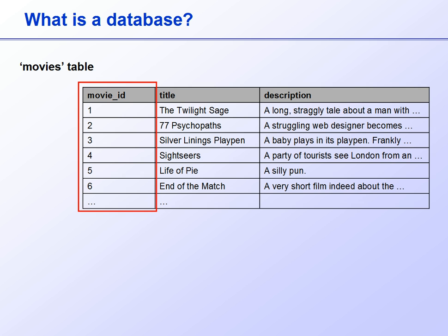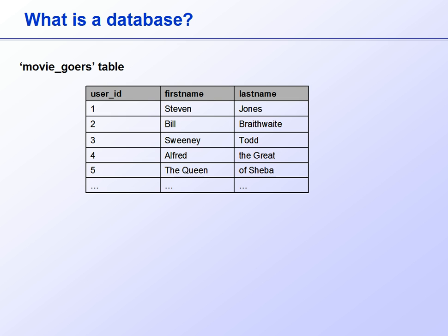This identifying number, or index, will be set up in such a way that it can never be repeated in the table. We'll also have a table called moviegoers, where moviegoers' details will be stored. This will be very similar, consisting of an ID number unique to each individual, and the individual's first name and last name.